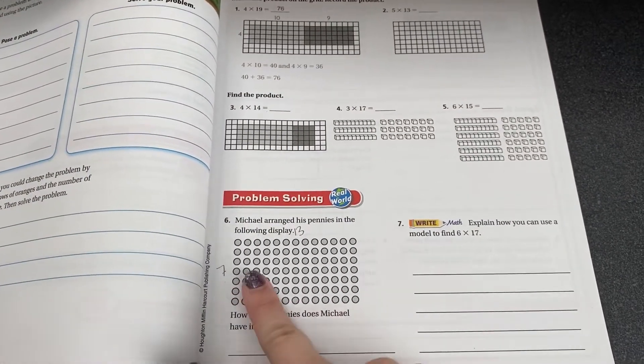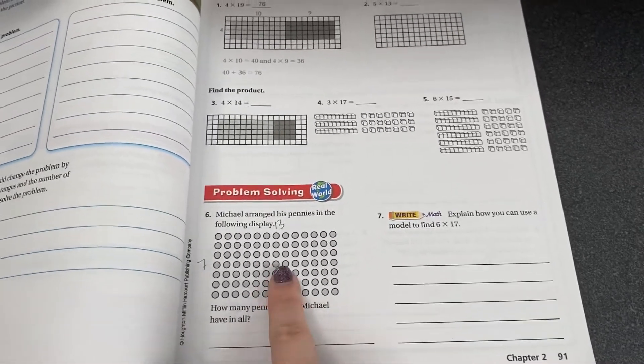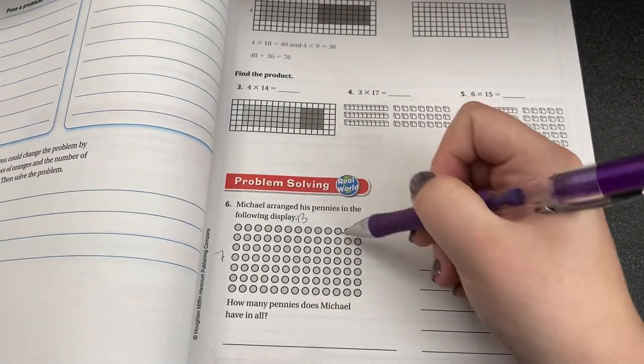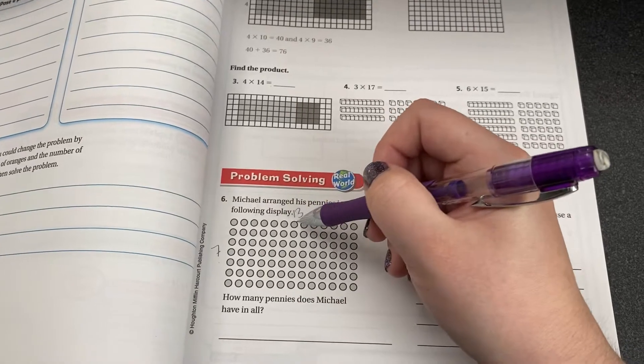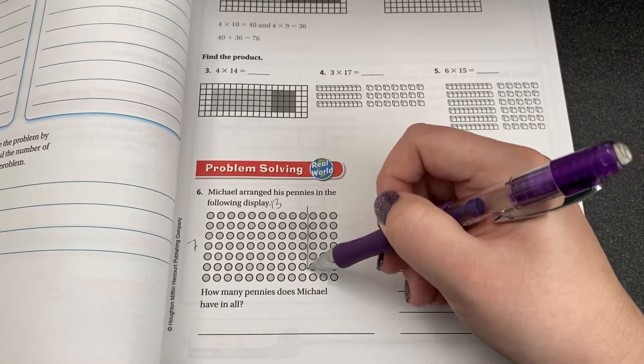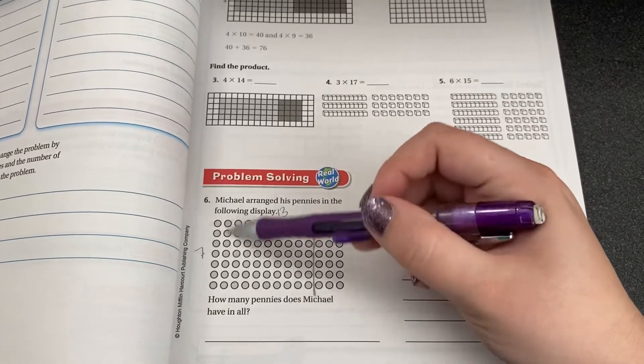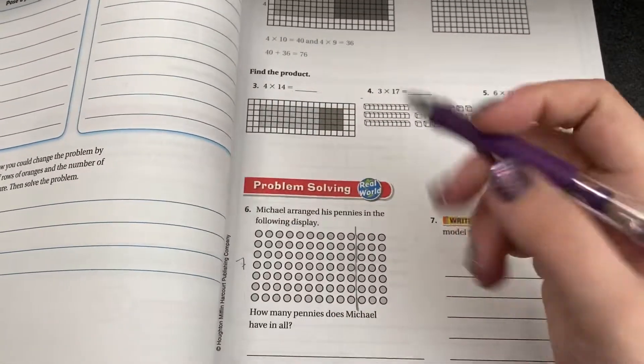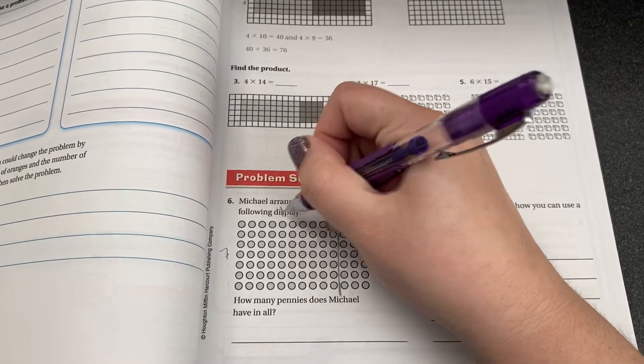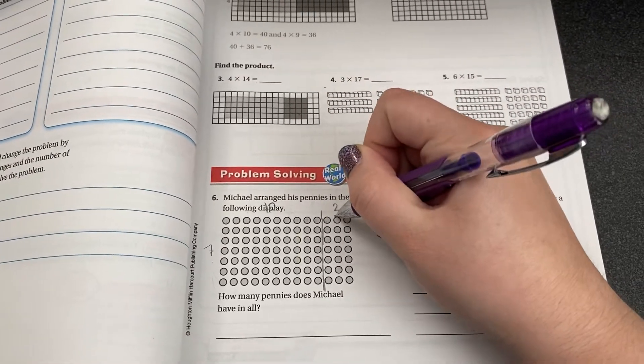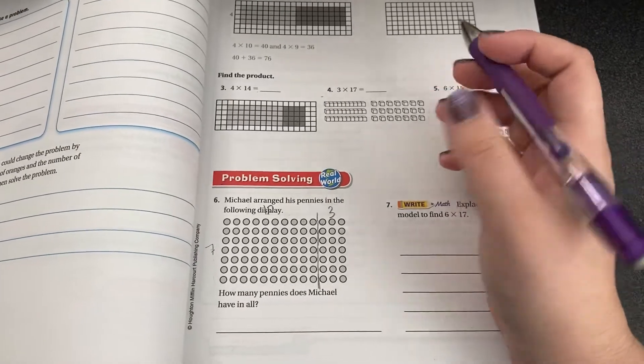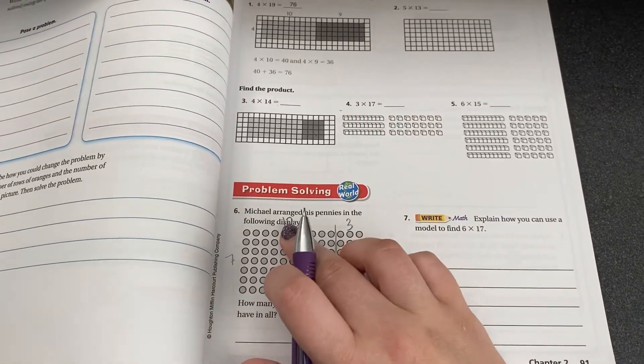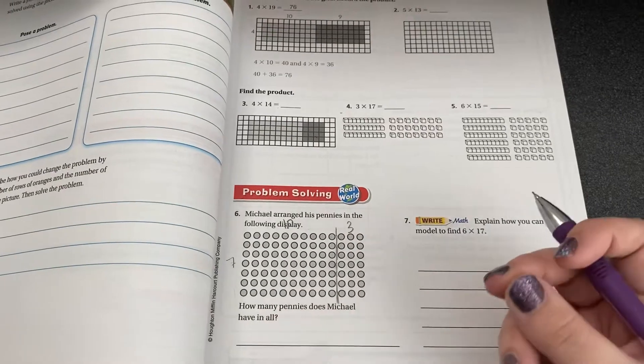Problem is I don't know seven times thirteen off the top of my head. That's not on my multiplication chart either. But I can actually split this up into more bite-sized pieces. I'm gonna put a little line here. I now have seven groups of ten and seven groups of three. And now I can multiply in more bite-sized pieces.